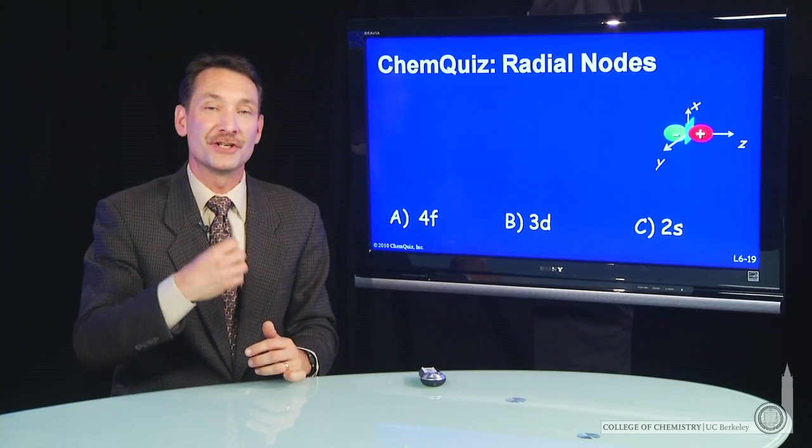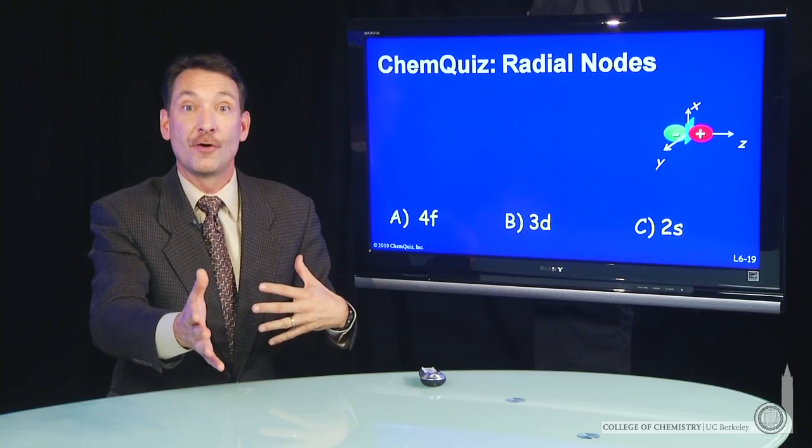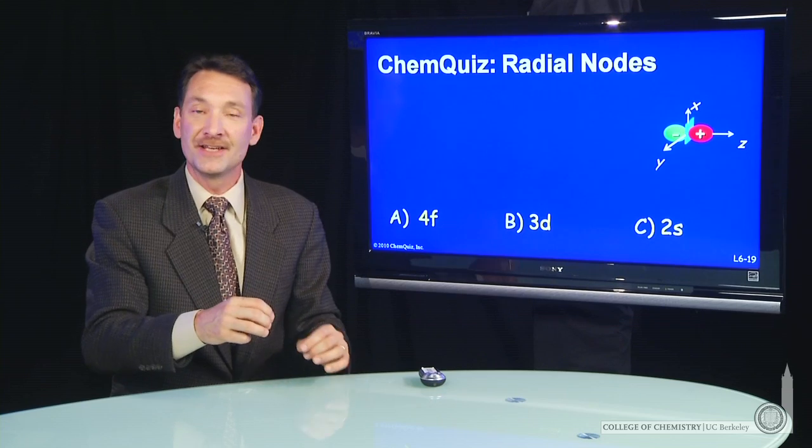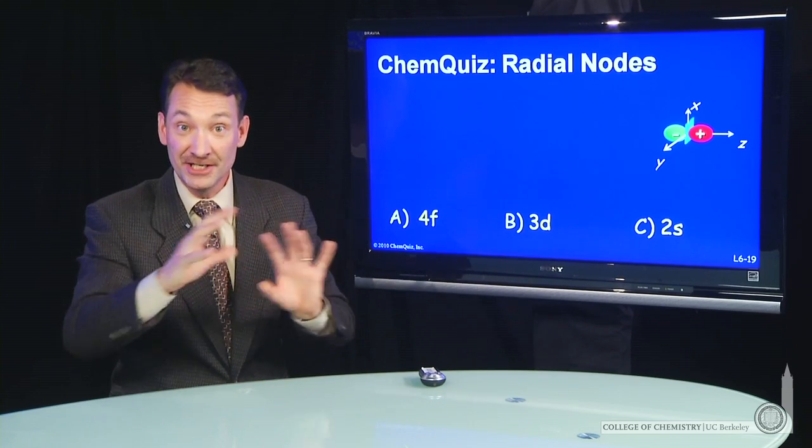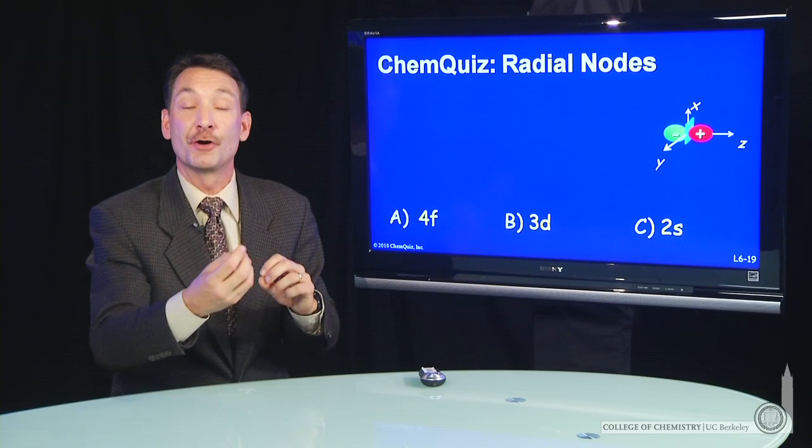We're talking about orbitals in terms of their shape, the number of nodes, and their orientation. Orbitals are described by three quantum numbers: n, l, and m sub l. n gives you the overall size and energy, l gives you the shape, and m sub l the orientation.